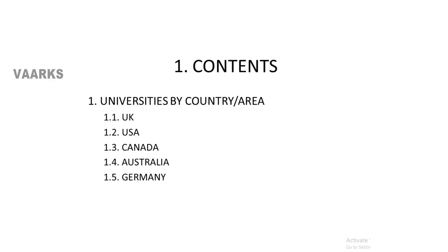So we move on to the content section. First we deal with the details of universities by country or area. The first country we will be looking at will be UK, then US, Canada, Australia and Germany. The details of universities within these five countries are included within this section.